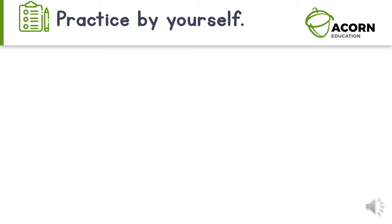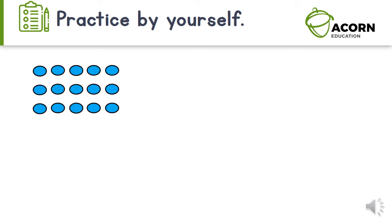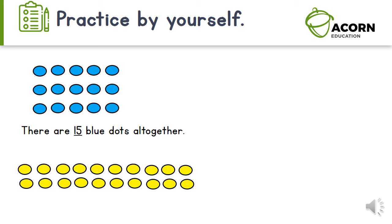Now you can practice by yourself. Remember to put the dots into smaller equal groups and then only count the groups. Are you ready? How many blue dots are there altogether? There are fifteen blue dots altogether. How many yellow dots are there altogether? There are twenty yellow dots altogether.